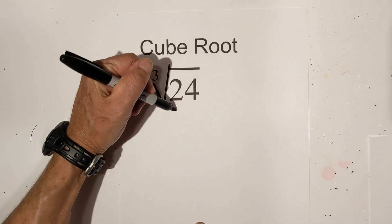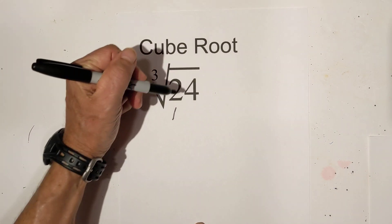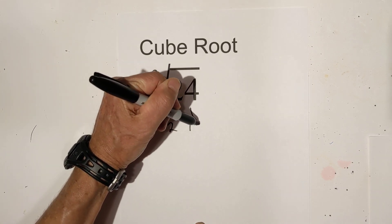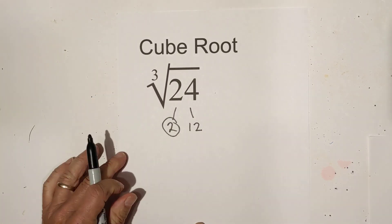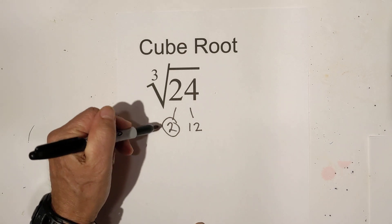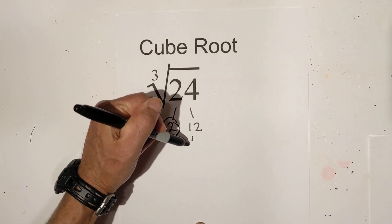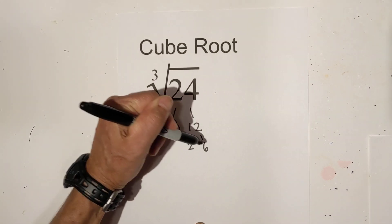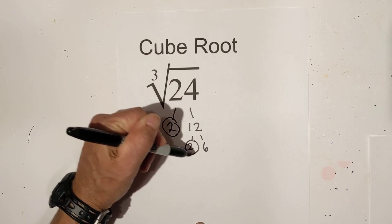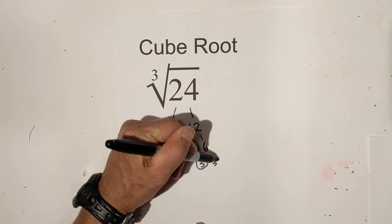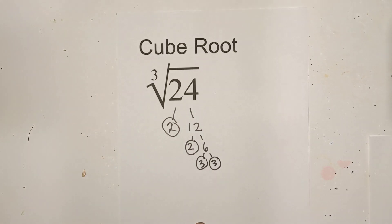I'm going to first create a factor tree. I know that it ends in an even number, so I'm just going to use 2. 2 times 12 is 24. Circle the 2 because it is prime. And then let's go with 2 times 6. Circle the 2. And then let's try 3 times 3. So now I have all of my prime numbers.